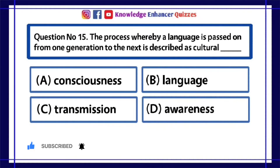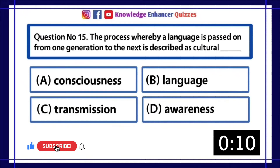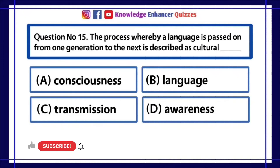Question Number 15: The process whereby a language is passed on from one generation to the next is described as cultural dash. A. Consciousness, B. Language, C. Transmission, D. Awareness. Option C is the right answer.